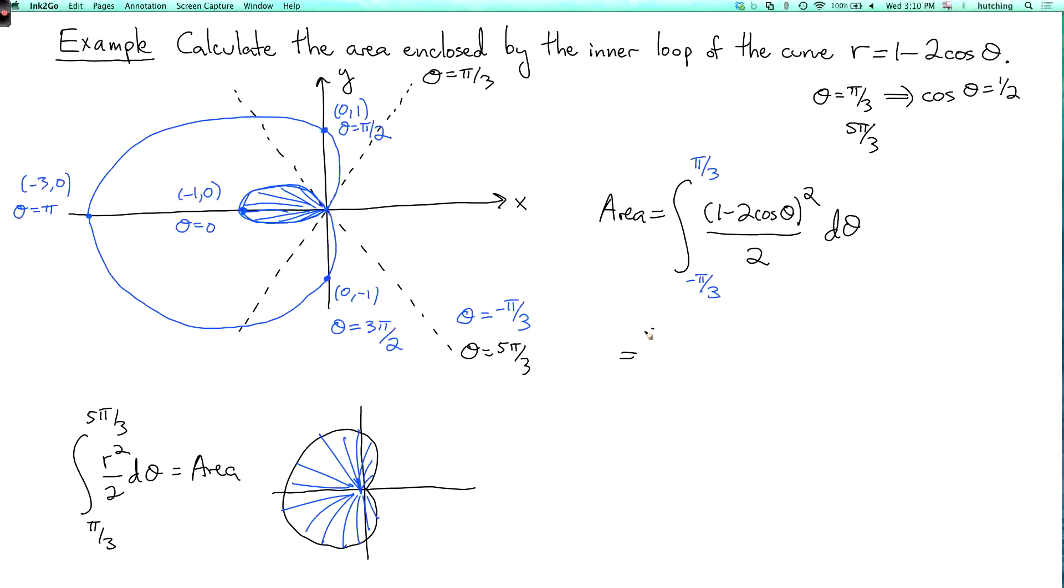So then this is the integral from minus pi over 3 to pi over 3 of 1 minus 4 cosine theta plus 4 cosine squared theta over 2 d theta.